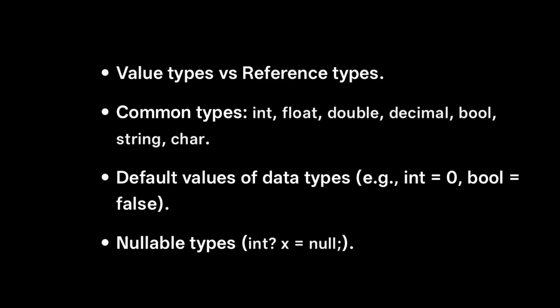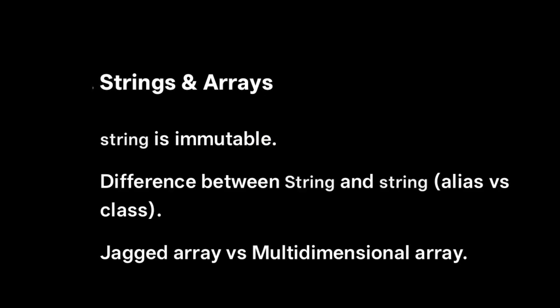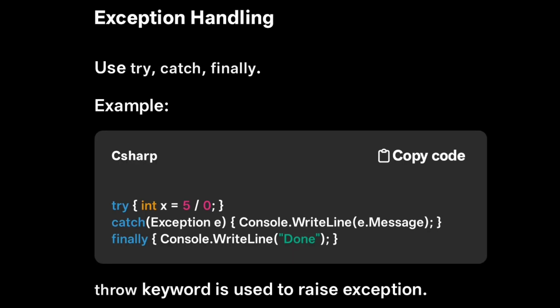For data types and variables: value types are stored directly — int, float, bool, and char. Reference types include string, arrays, and object. Example: 'int x = 10' and 'string name' — note 'string' is lowercase in C#, unlike Java's capital 'String'. Default values: int = 0, bool = false, string = null. Strings are immutable — you cannot change a string once created. Arrays follow the same syntax as Java.